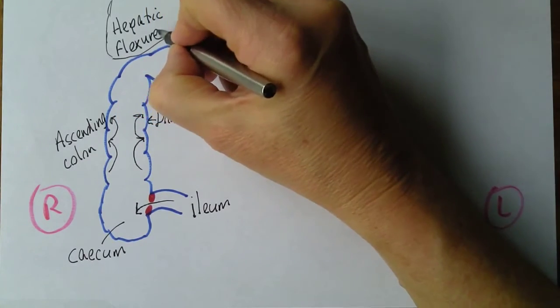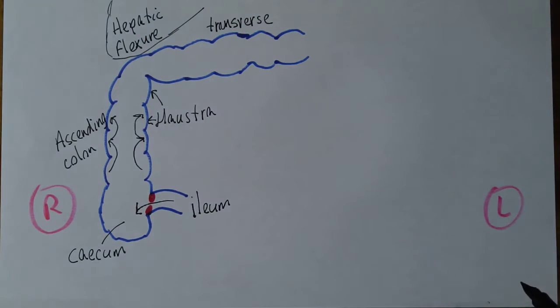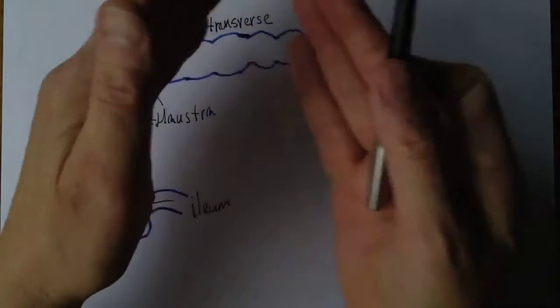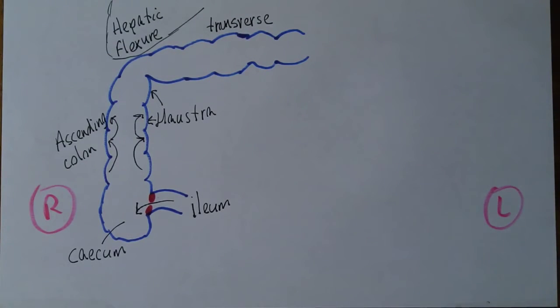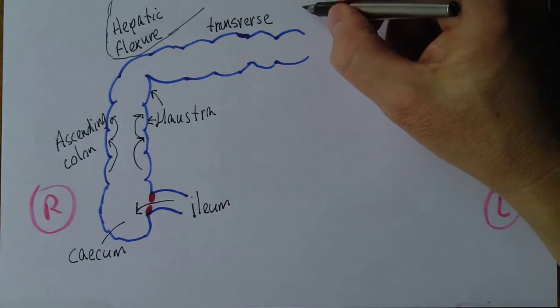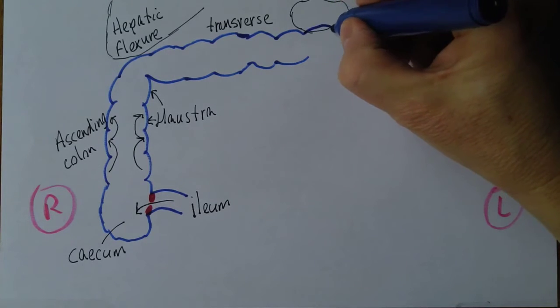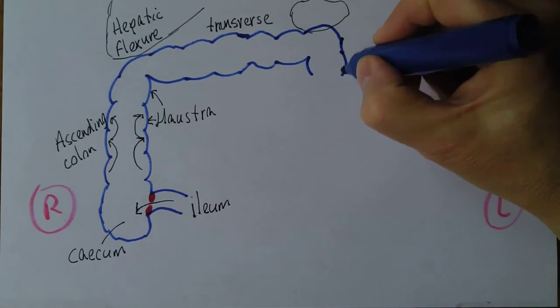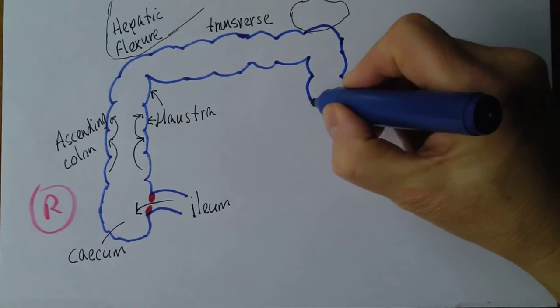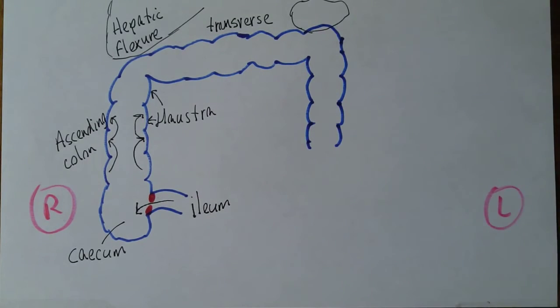A flexure is a bend, so that's the bend by the liver. Then we go along this way with the same process of haustral churning with some peristaltic contraction of the muscle to squeeze all the material along. When we get up to here we're going to come across another organ about here and that organ there is the spleen, so it's necessary to bend again and this time it will bend and start to go down the way again in the series of haustra.